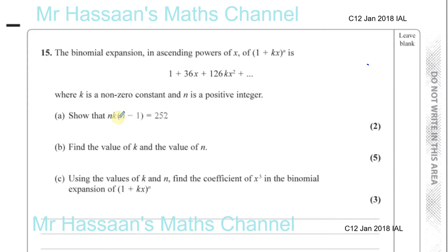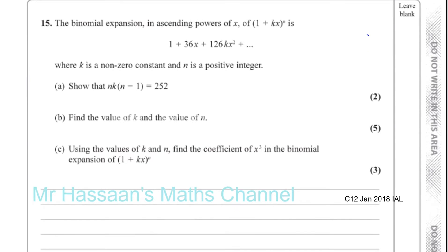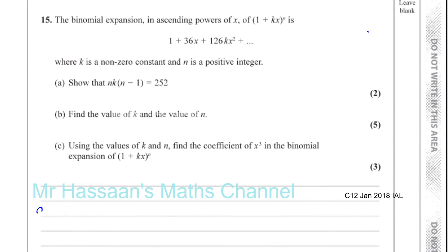Here, show that n times k times n minus 1 equals 252. Now, this is where I find the method of NCR not so useful in this particular type of question when you don't know what the power is. It makes things more complicated. So there's a method which, in your formula books, is present.